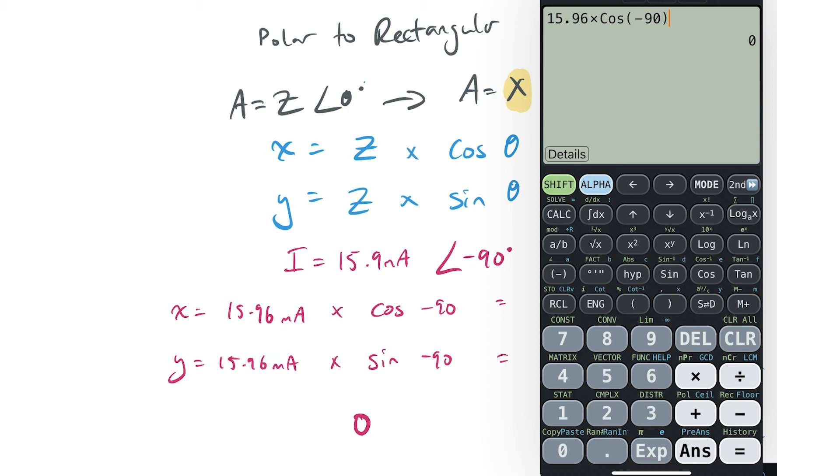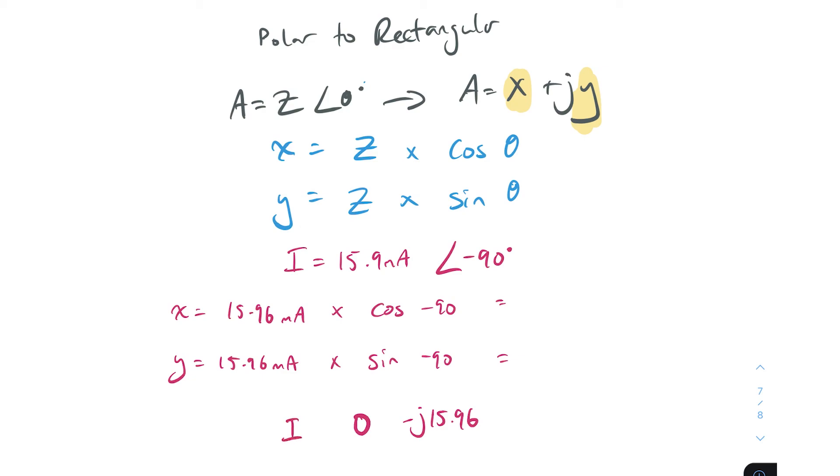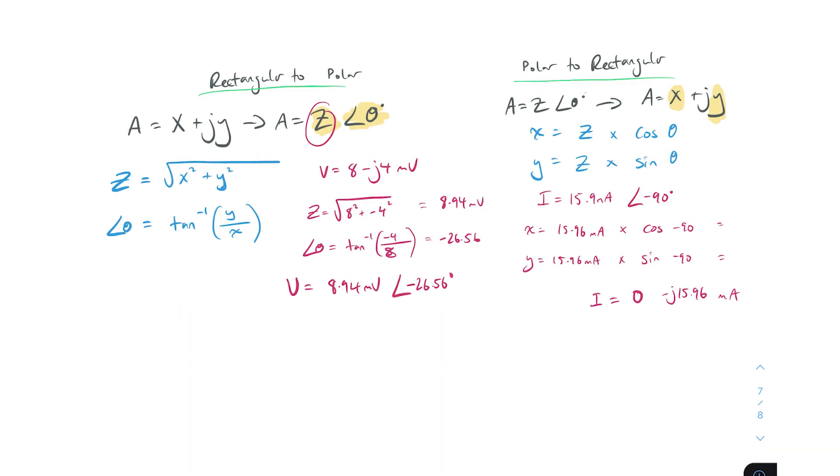As you progress through your electrical engineering studies you'll know immediately why it's zero. Same again: 15.96, but this time to find the y component we're going to multiply by sine of minus 90, and that gives us negative 15.96. So what we'd say then is that our y component is minus j15.96. Our total current in this circuit, I equals zero minus j15.96 milliamps. That's it.